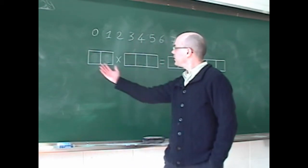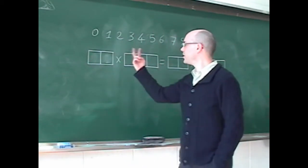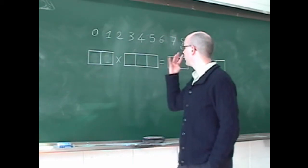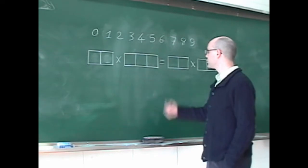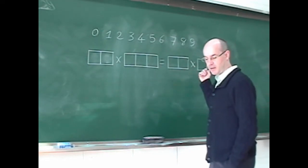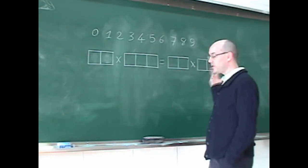We have here a multiplication with a two-digit number multiplied by a three-digit number equals two-digit number multiplied by a three-digit number.